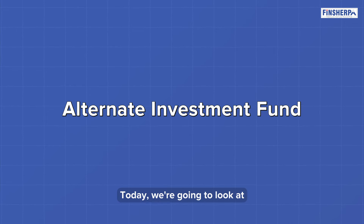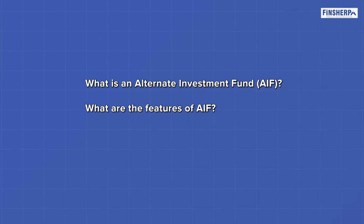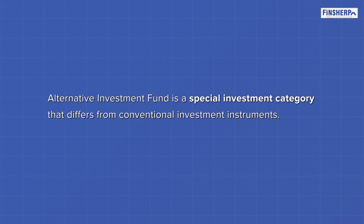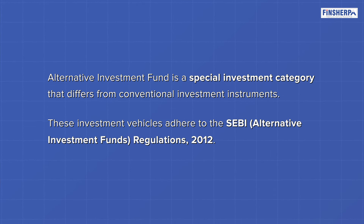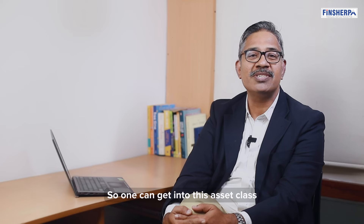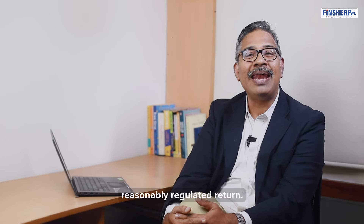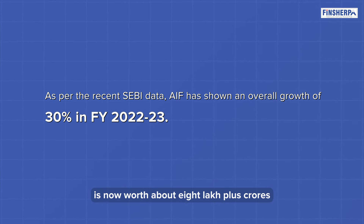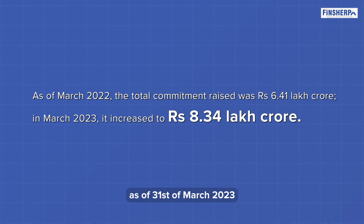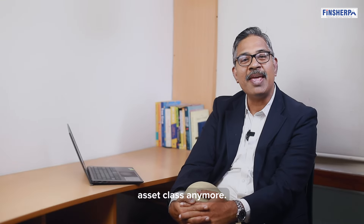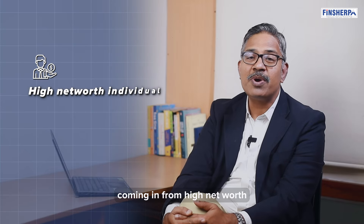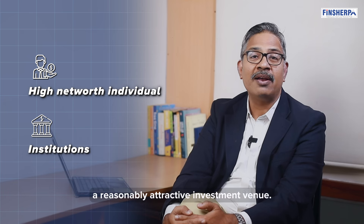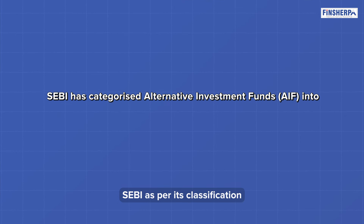There's been a lot of interest in the investment vehicle called the Alternate Investment Fund. Today we're going to look at what is an Alternate Investment Fund, its features, and who it applies to. Like mutual funds, AIF is a class of investments governed under SEBI's Alternate Investment Fund Regulation 2012 — a regulated asset class. As of 31st March 2023, the AIF category is worth about 8 lakh crores, attracting substantial investments from high net worth individuals and institutions.